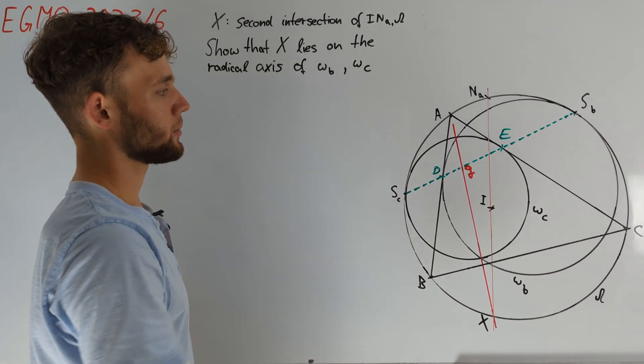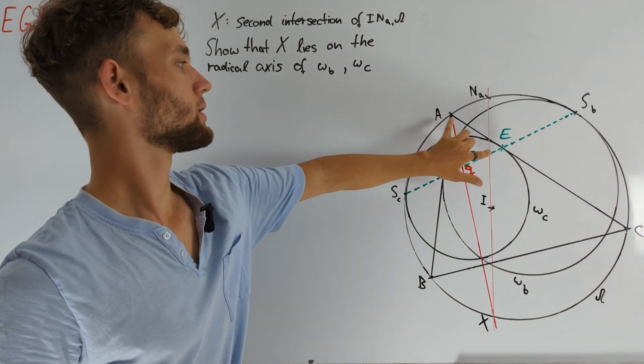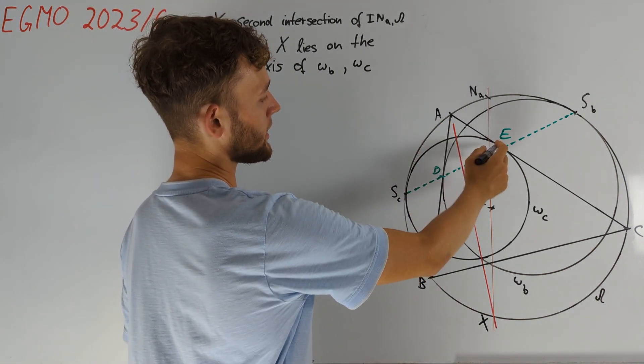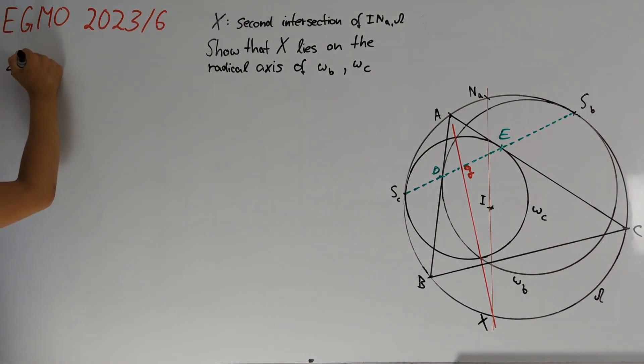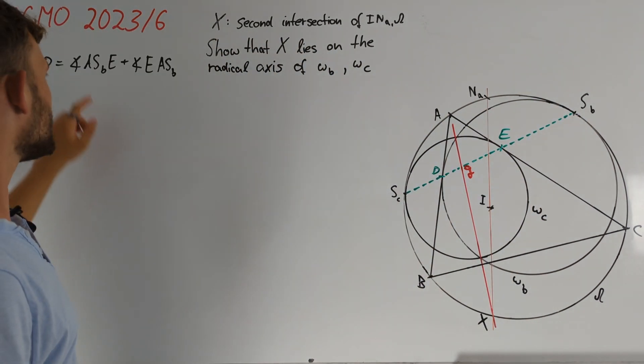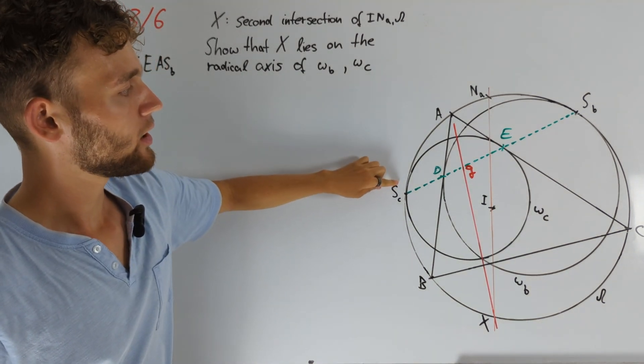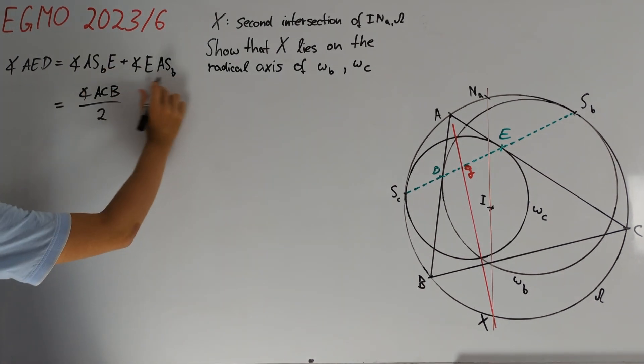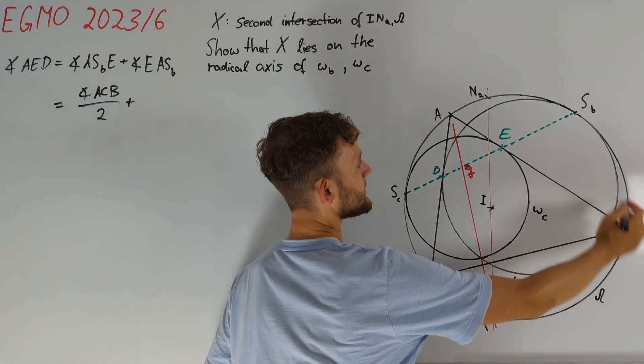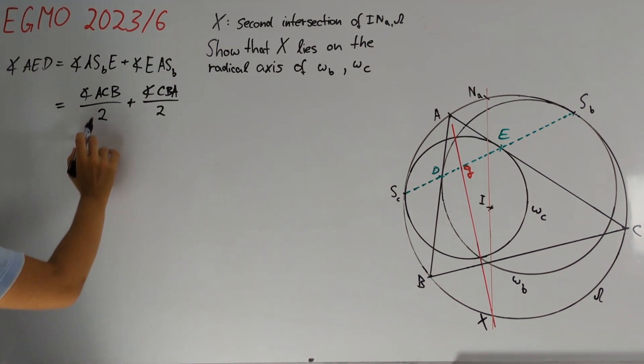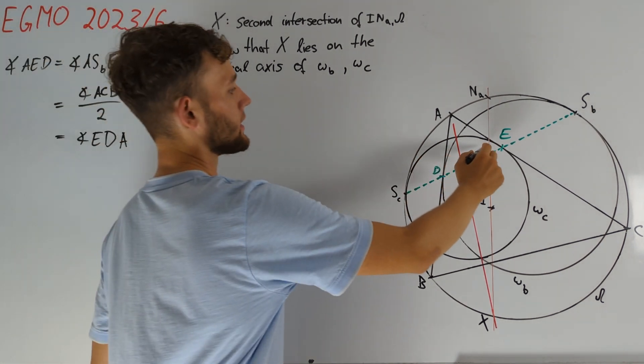Now we have a beautiful picture where we can already guess that AD is equal to AE. One way we can prove this is by taking a look at these angles. So angle AED is equal to angle ASBE plus angle EASB. Angle ASBE is just the angle over arc ASC, which is half of the interior angle ACB. We also have that angle EASB is equal to the angle above arc CSB, which is half of the interior triangle angle CBA. Since this expression is symmetric in B and C, we also get that angle EDA is equal to this, and therefore this triangle is isosceles.